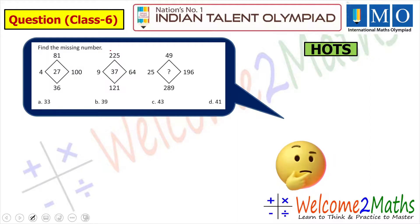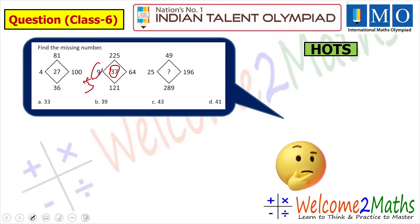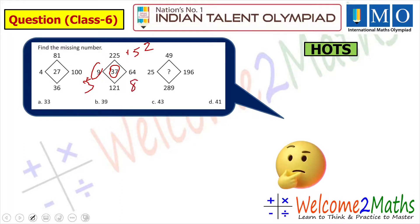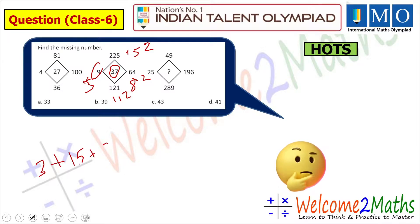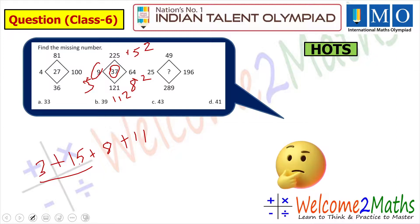The same way we can verify the second diamond with center 37: the numbers are 9=3², 225=15², 64=8², 121=11². Adding the roots: 3+15+8+11 = 37. Correct!